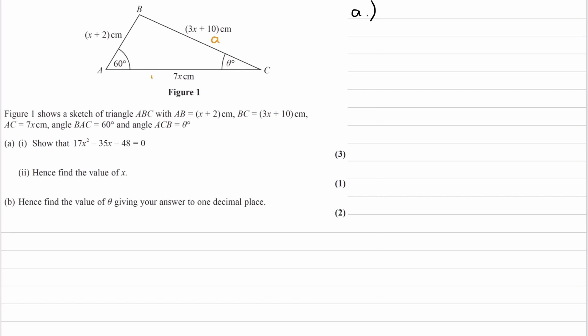We can call this side A. This will be side B. This will be side C. So let's put this in the equation. I'll write out the equation first. So A squared is B squared plus C squared minus 2BC cos A.